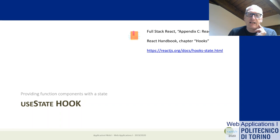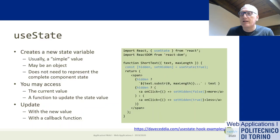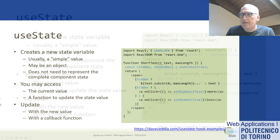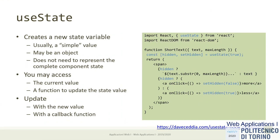Let's start with the useState hook. As the name says, useState enables a functional component to have state — previously the only way to have state was using this.state in class components. All hooks have a name that starts with 'use'. useState creates a new state variable. You import useState from React and call it inside a functional component. In this example, we have a function that shows a shortened version of text and uses a 'hidden' state variable to toggle between full and shortened versions.